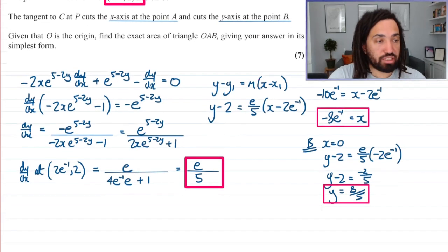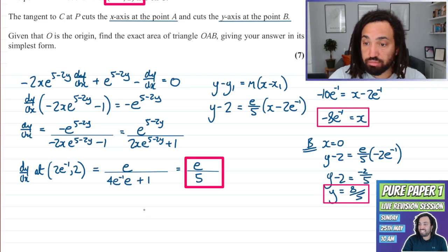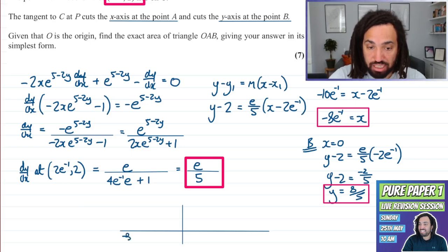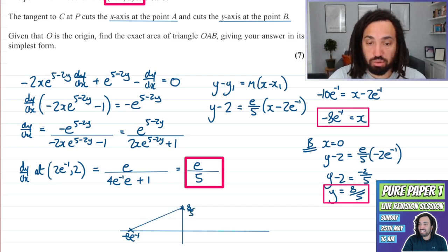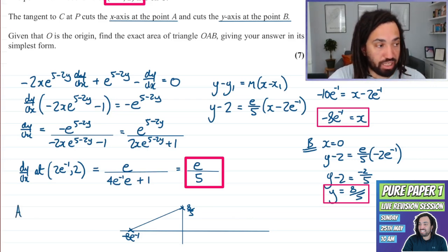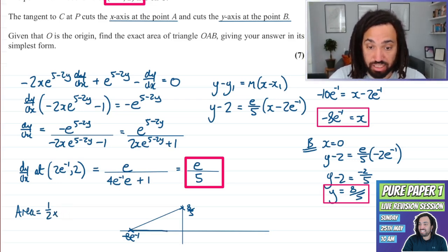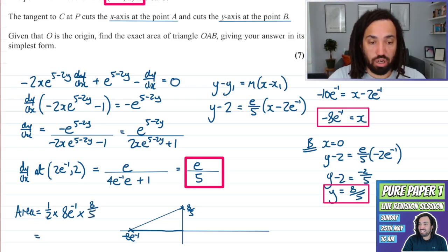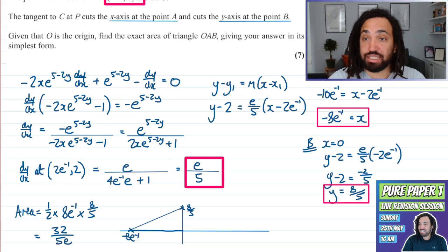Okay perfect so all we need to do now is just work out the area of the triangle. So in doing so we will get an X coordinate of minus 8E to the minus 1 and a Y coordinate of 8 over 5. So the triangle will look like this and the area of course will just be the base, sorry half of the base which will be or the distance from there to there will be positive 8E to the minus 1 times by 8 over 5. So 64 half is 32 over 5 is 32 over 5 and E to the minus 1 is just an E on the bottom and that is the exact area.